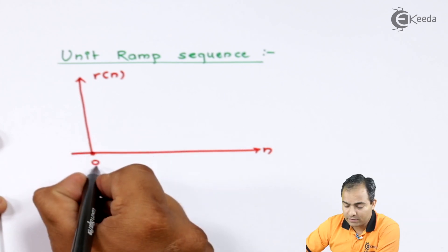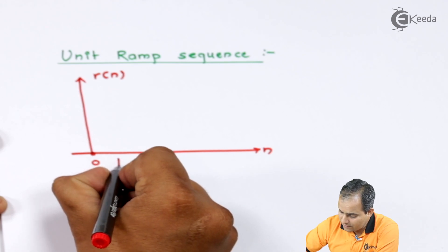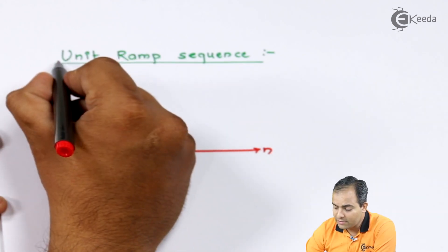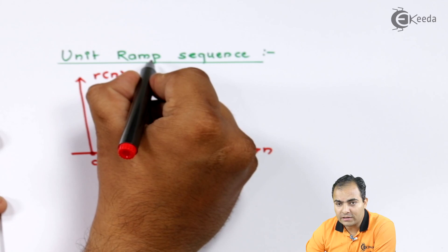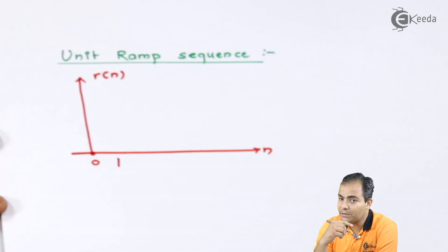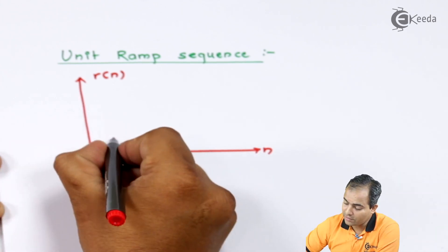at instant zero. Next, at the first sample, as the unit ramp sequence is mentioned, your amplitude goes on increasing by one. How this amplitude increases one by one, we have discussed in continuous time also. So let's just plot this graph.